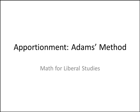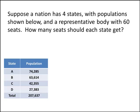In this video, we'll learn how to solve an apportionment problem using Adams' method. Here's a typical problem: suppose a nation has four states with populations shown below and a representative body with 60 seats. How many seats should each state get?